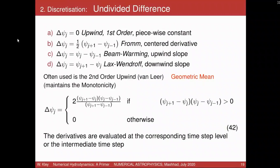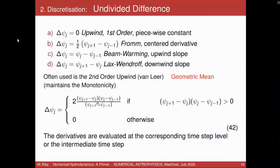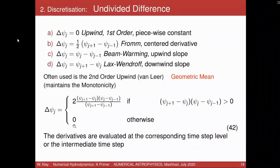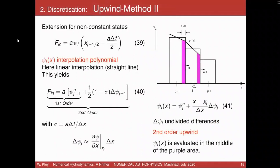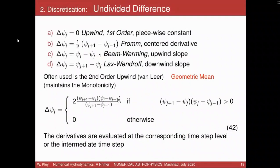Very often used in codes like Fargo is a slope given by the geometric mean of the left and right slopes — delta_psi_j equals this geometric mean expression, and 0.0 otherwise. This slope is an average: to calculate the slope at a point, you take the geometric average of the left slope and the right slope. What this does is it maintains the monotonicity of the flow — you don't generate new maxima where none existed before. Monotonicity-preserving slopes are key to many numerical schemes nowadays.